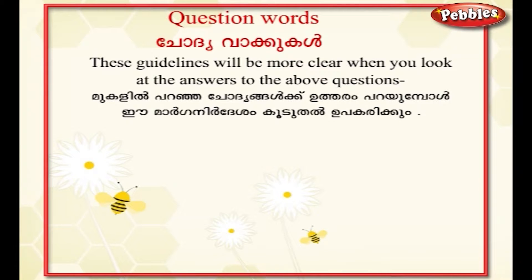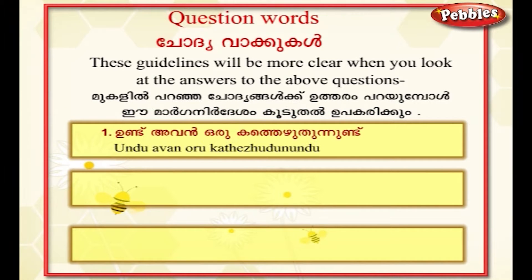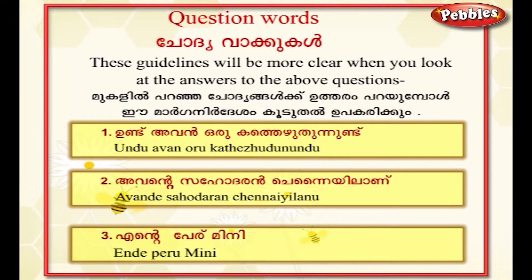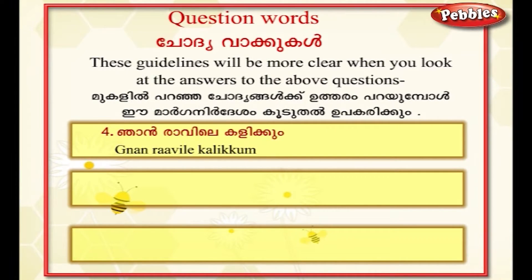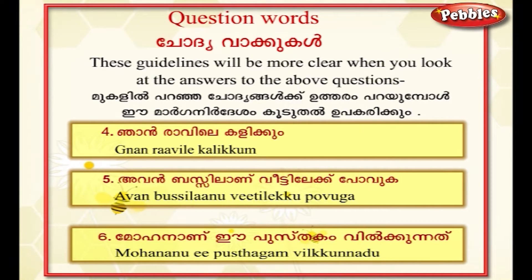કૂડુદલ ઉપગરીકિં. ઉંડ, અવનુડુ કત્ત ઇરિદું નુંડ. અવન્ડ સહોદરં જેણને ઈલાણ. અવનુડ પેરિ મિનીય નાણ. નાણ ર્યાવિલે કળિકિં. અવન્ડ બેસિલાણ વીટિલેકે પોવગા. મોહનાણ ઈ પુસ્તગં વિલ્કુંનદ.